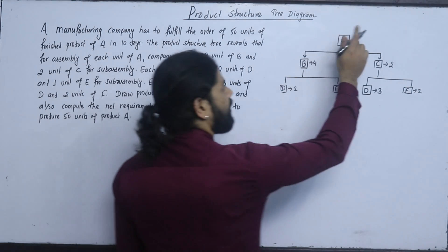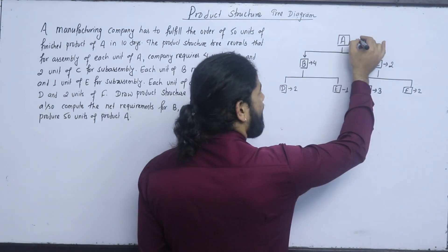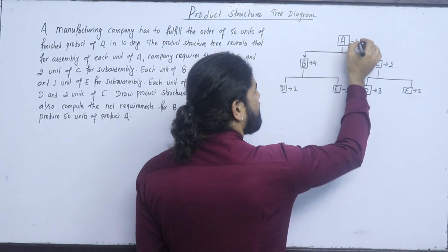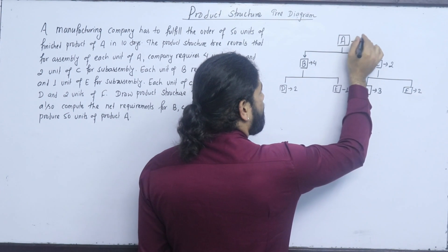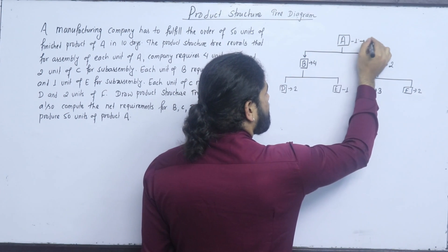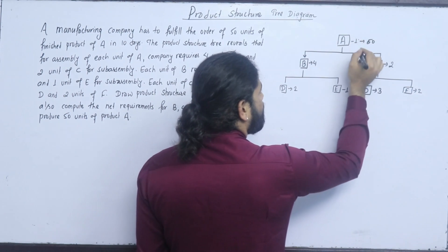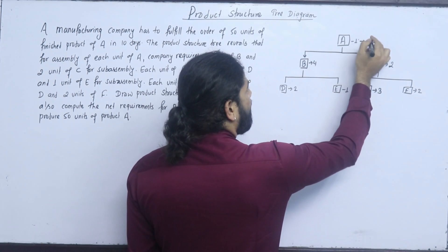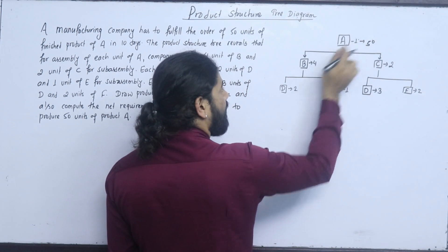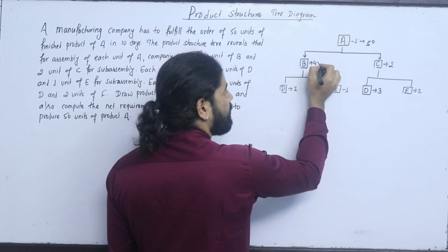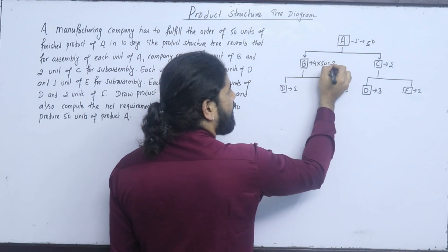Now, we have to compute the units of B and C required to produce 54 units of A.